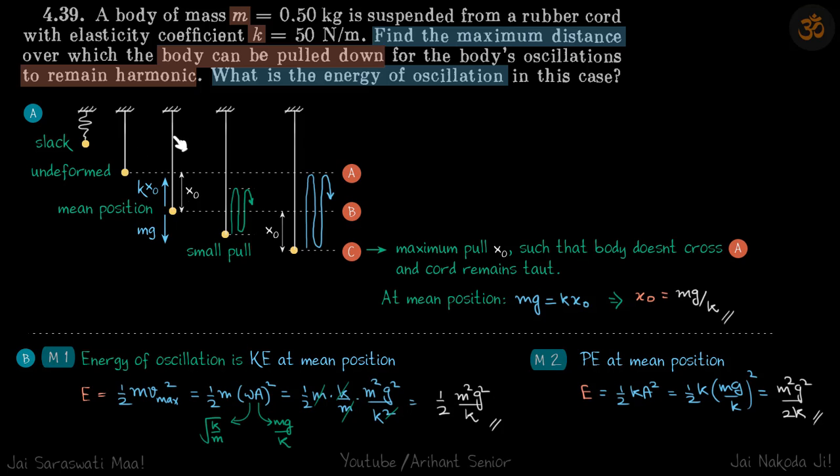This is the initial position where the body is kept at its mean position. It is just hanging and of course at the mean position mg should be equal to kx0.